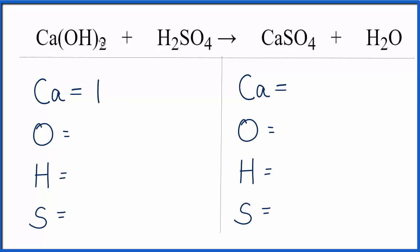We have one calcium, and then this oxygen here, this two applies to the whole OH. So we have two times one, we have two oxygens, and we've got this four right here, so we have four other oxygens. We add them up, we have a total of six oxygens.